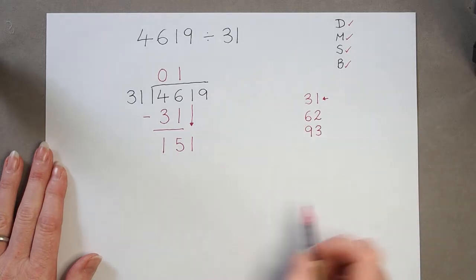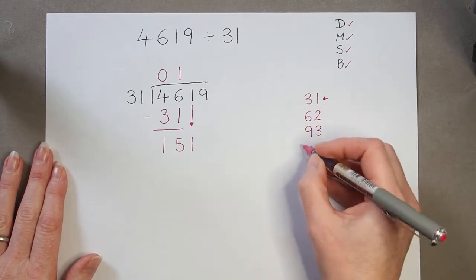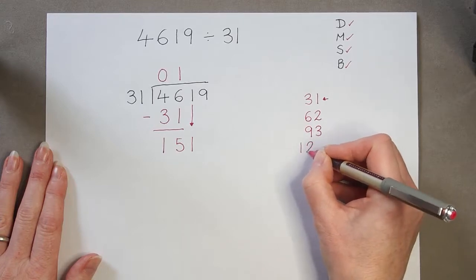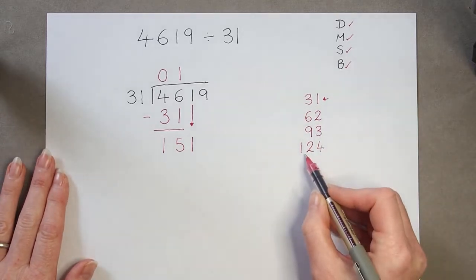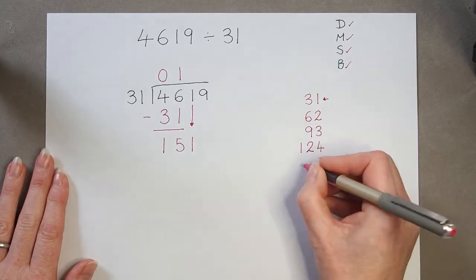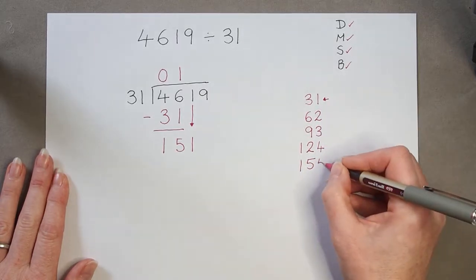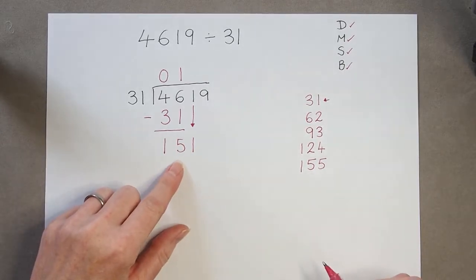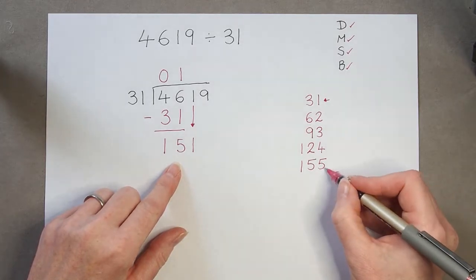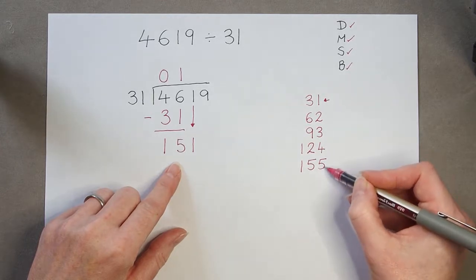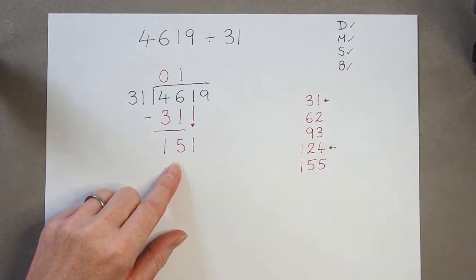I need to keep going. I need to get to 151, so my next multiple would be, keeping that pattern going, if I add on 3 tens I would get 12 tens, 120, and my units has gone up by 1, giving 124. I still need to keep going, so I'm going to add on another 3 tens, so I'm going to have 150 and another 1, giving 155. I can see now I've gone too far. I've got 151, so I can't go this far. I need to stop before I get there. I've not got enough to make 155, so I'm going to stop at this multiple, 124.